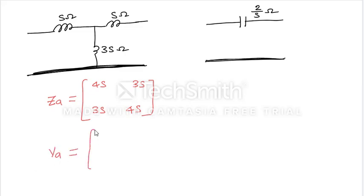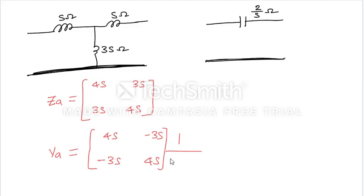So let us find the inverse of this Z-matrix. We have 4s, minus 3s, minus 3s, and 4s. The inverse is 1 over (16s² minus 9s²). We'll also find the Y-matrix of this network, and we can note this element is 2/s ohms.